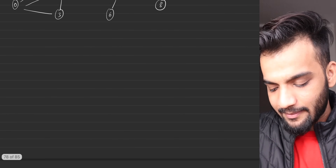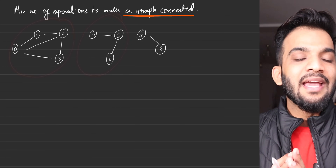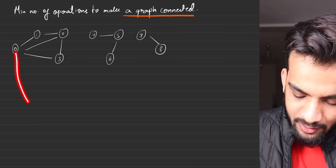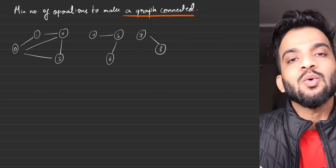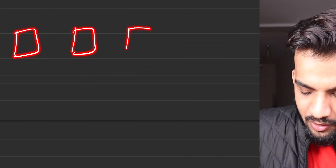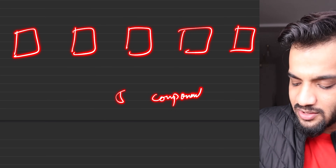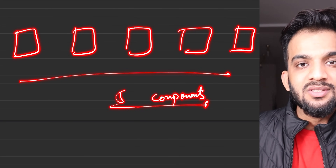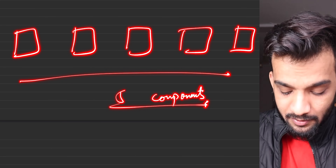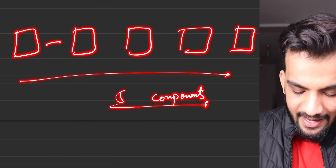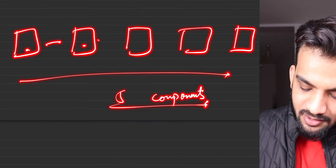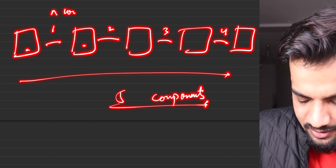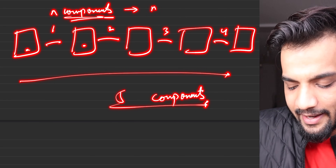Before solving this problem we have to analyze: what are components and how can we connect them? If I have this component and this component, they can be connected by connecting any of the two nodes from both components. If I pick up any node and connect it to any other node, the two components will get connected. So if there are five components, how many edges do you require to connect them into a single component graph?